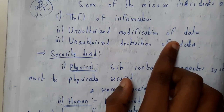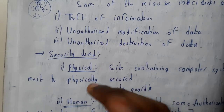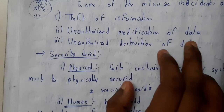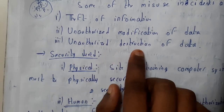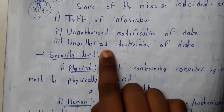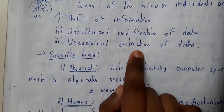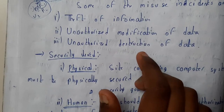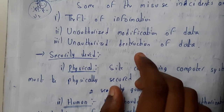The second is unauthorized modification of data. If there is a file in your system with important code and there is no security, someone can enter the system and modify the file. The third is unauthorized destruction of data — hackers delete important files, most commonly operating system files.